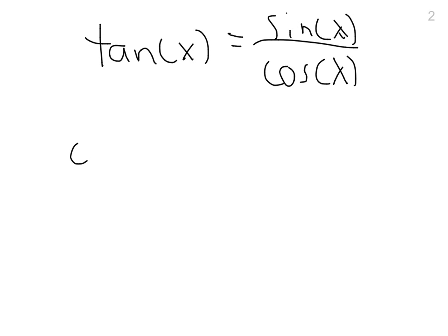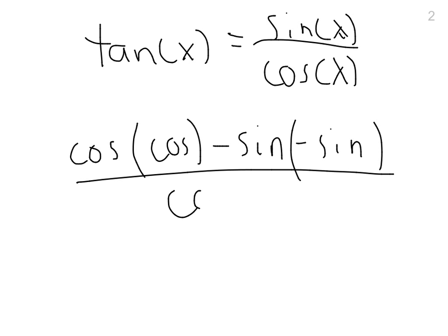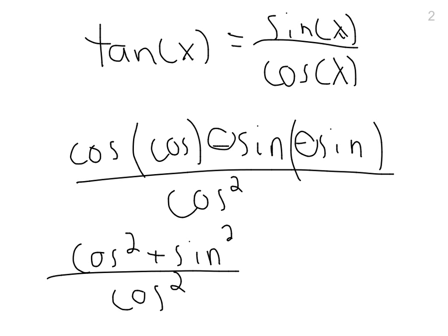So we have cosine low times, what's the derivative of sine? Cosine. Low d high minus high is sine, and the derivative of cosine is negative sine over cosine squared. So we have cosine squared, and then those negatives, the two negatives here are going to cancel out, and we have plus sine squared. So we have cosine squared plus sine squared over cosine squared.